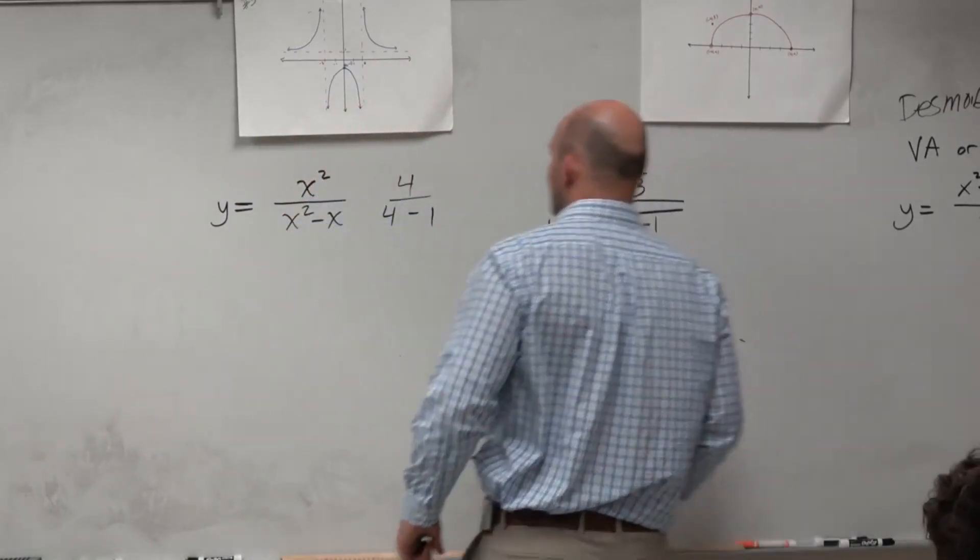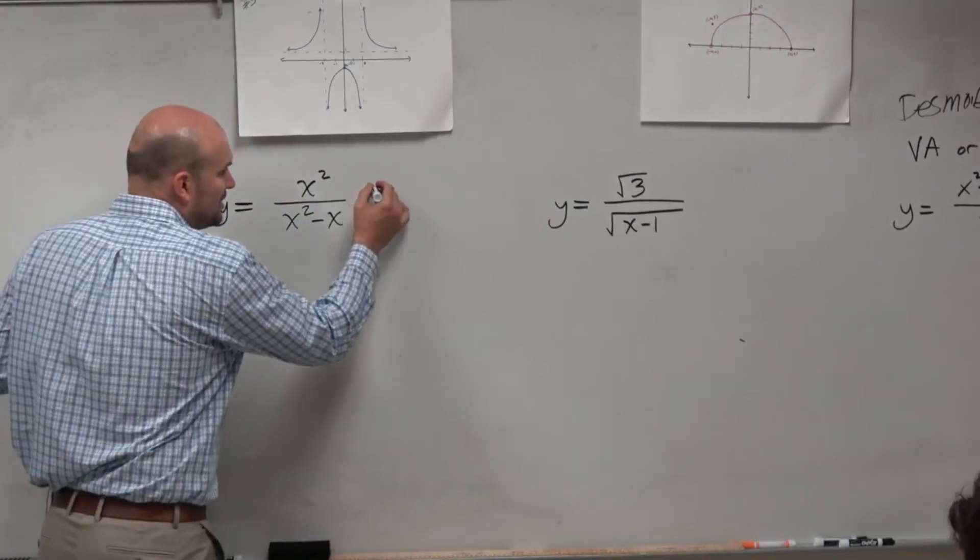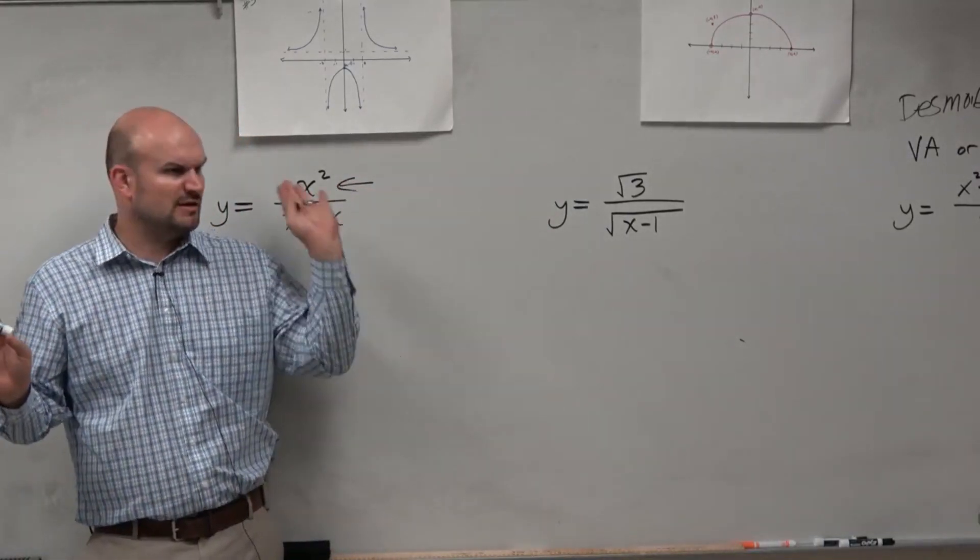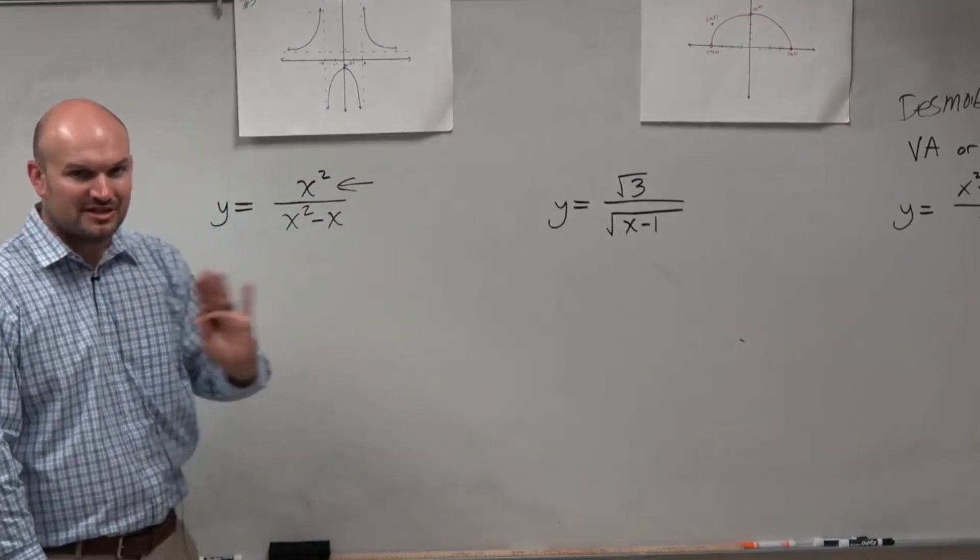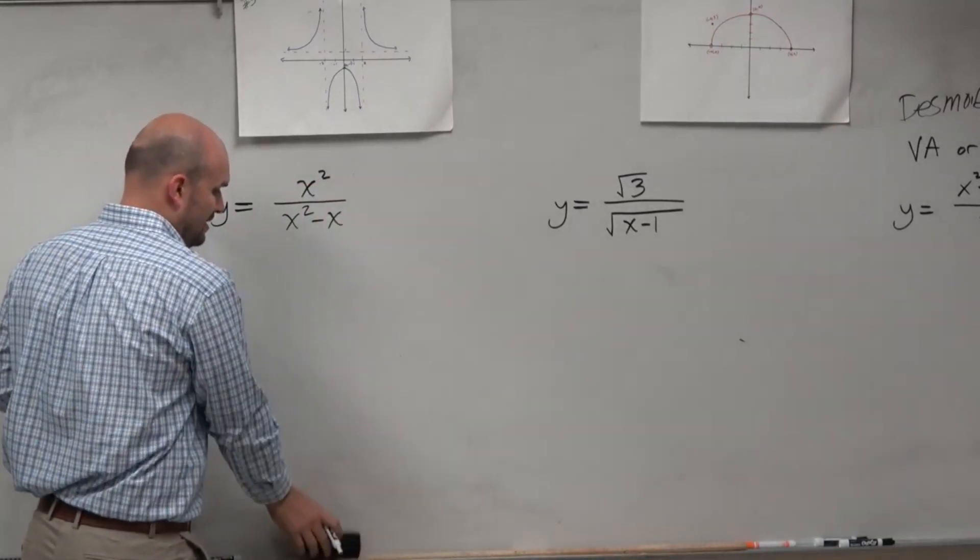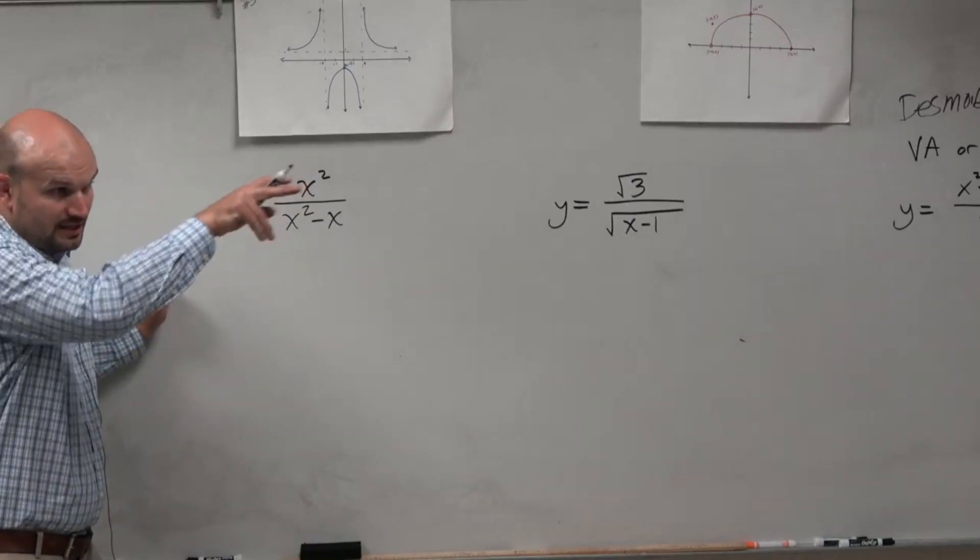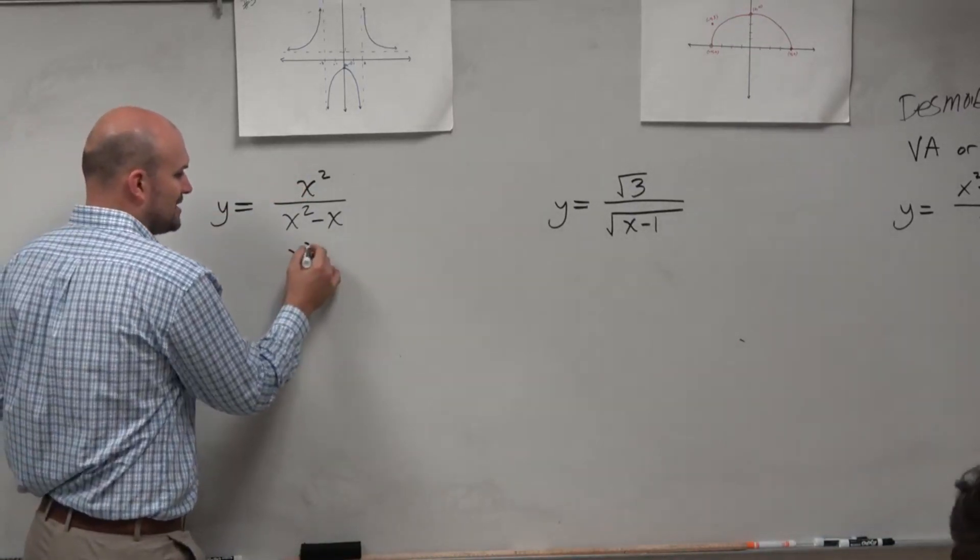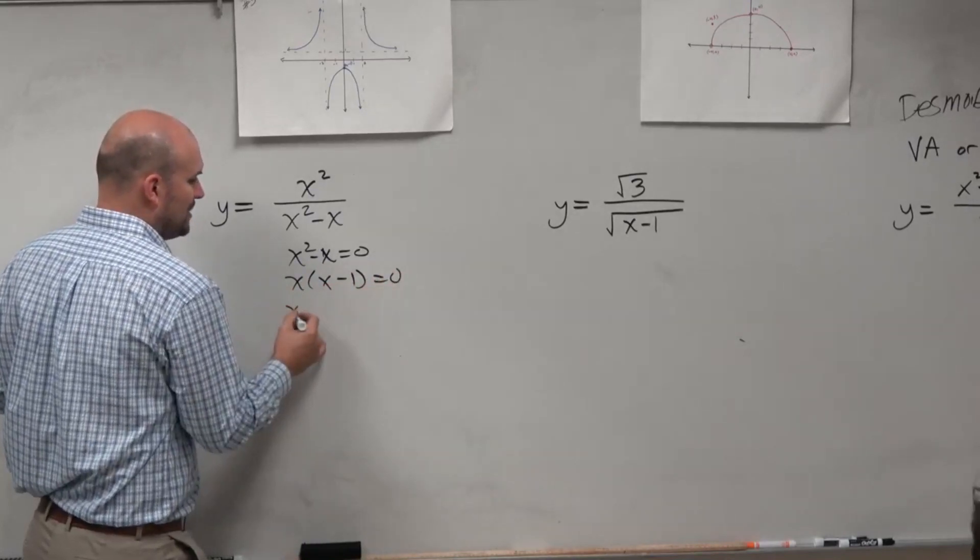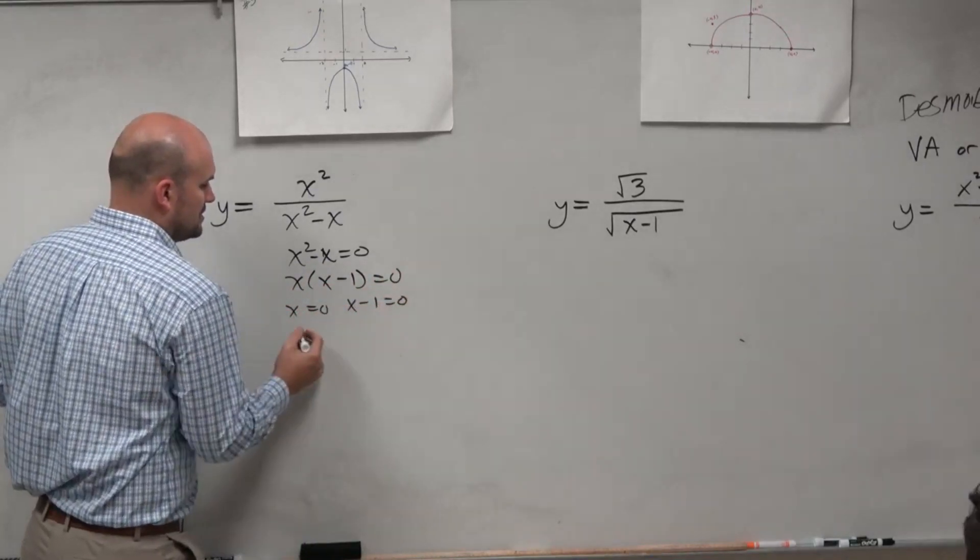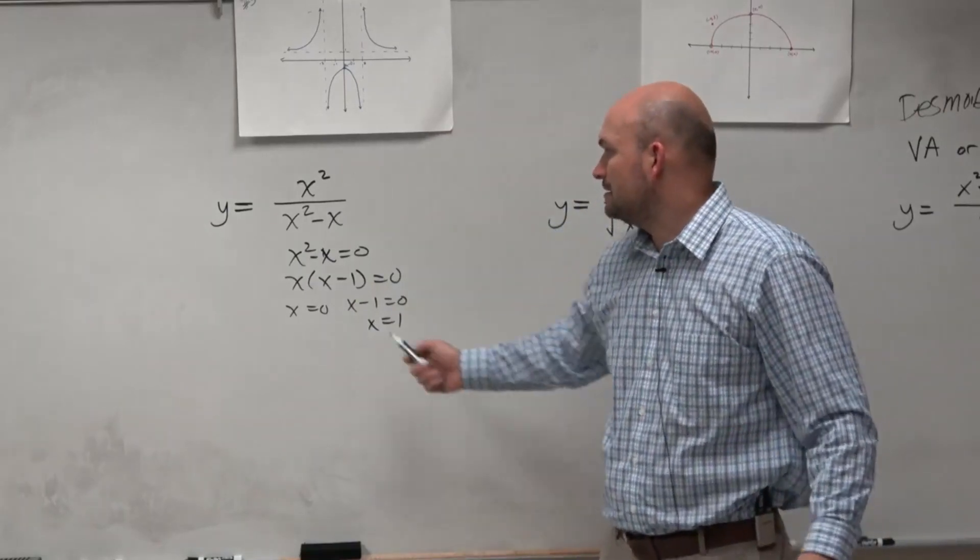We got to be careful because we could have radicals in the numerator or something like that too. Let's look at our numerator. Does our numerator have any restrictions of that type of function? Is there any restrictions for x squared? No, because we looked at x squared. That's a continuous function. That's good. So the only thing we need to worry about here is what are the numbers that make our denominator equal to zero? Those are not in our domain. So we set it equal to zero and we solve. Factor out an x. Apply the zero product property. So x equals 0 and x equals 1. That means my function is defined for all numbers except 0 and 1.